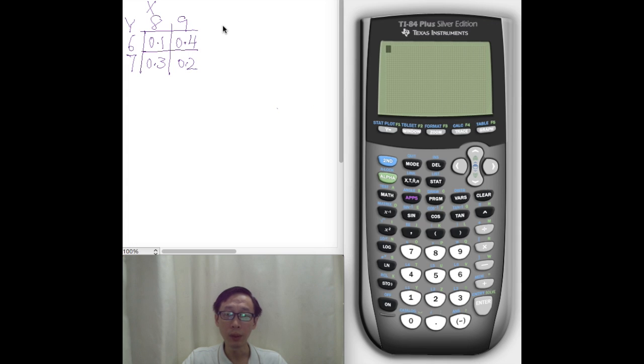So here we want to use the TI-84 calculator to calculate the covariance for a joint distribution for X and Y.